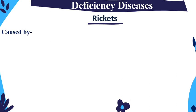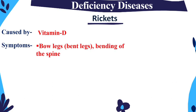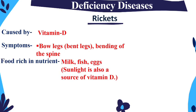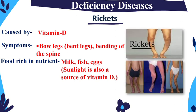Next is Rickets, caused by deficiency of Vitamin D. Symptoms include bow legs and bending of the spine. Foods to consume include milk, fish, and eggs. Exposure to sunlight — especially morning sunrise — also helps our body absorb Vitamin D and prevent rickets.